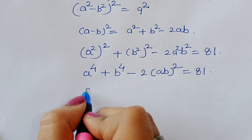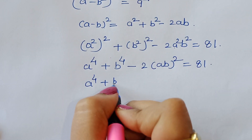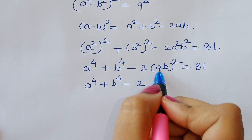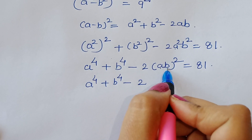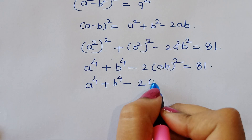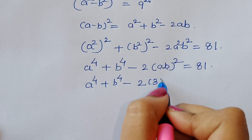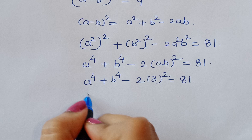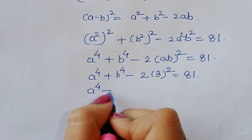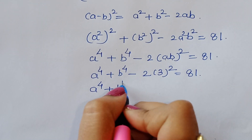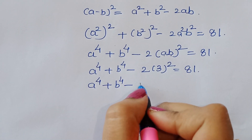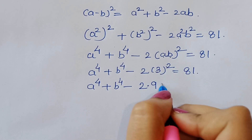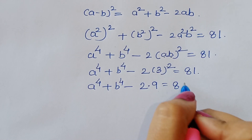We know the formula: a minus b whole square is equal to a squared plus b squared minus 2ab. So using this formula, we get a to the power 4 plus b to the power 4 minus 2a squared b squared is equal to 81. Now, the value of ab is given as 3, so we write 3 squared is equal to 9.